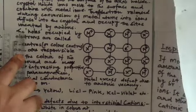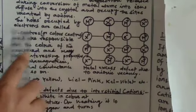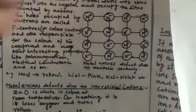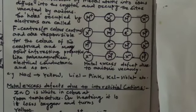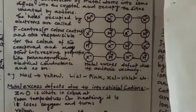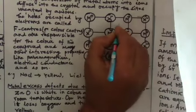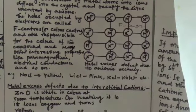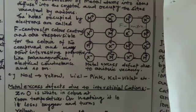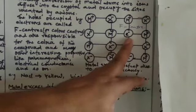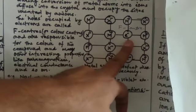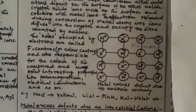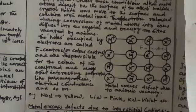The electron released during the conversion of the metal atom into a metal ion diffuses into the crystal and occupies the site vacated by the anion. The holes occupied by the electrons are called F-centres.